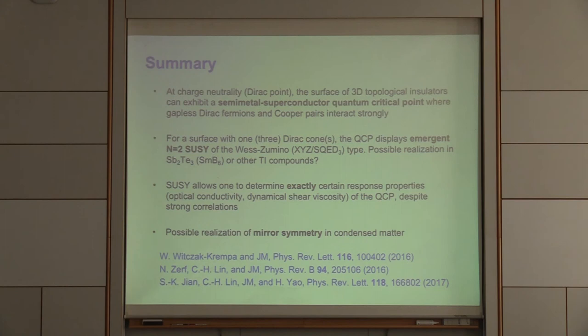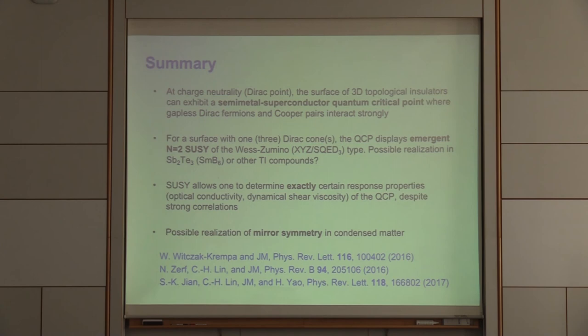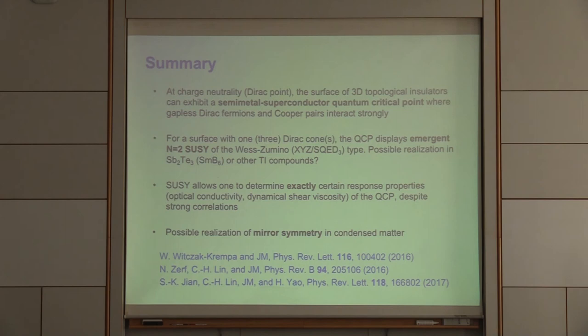To summarize: at charge neutrality, the surface of 3D topological insulators can exhibit a semi-metal to superconductor critical point in a universality class distinct from the bosonic 3D XY problem. With one or three Dirac cones, there is emergent supersymmetry — either the Wess-Zumino type or the XYZ type, which is dual to supersymmetric QED. Supersymmetry is very powerful here because it allows exact determination of dynamical response properties of a strongly correlated critical point in more than one dimension. Thank you.